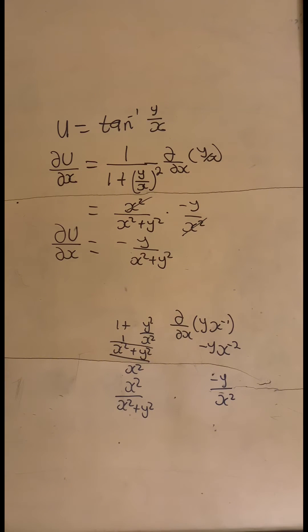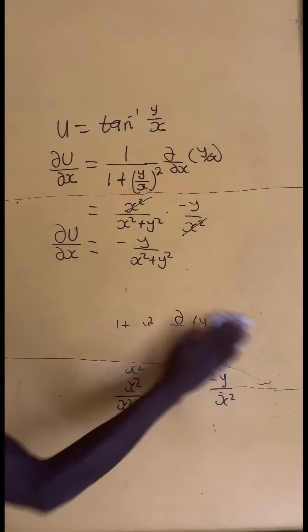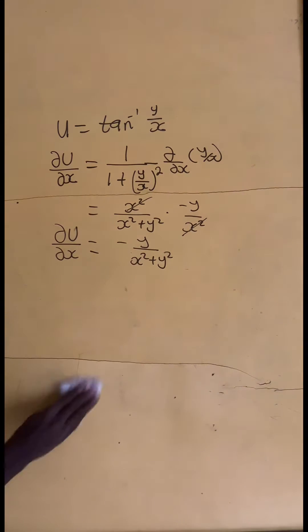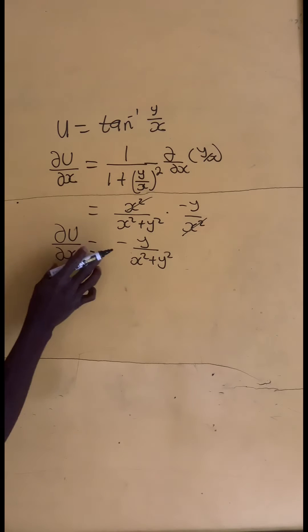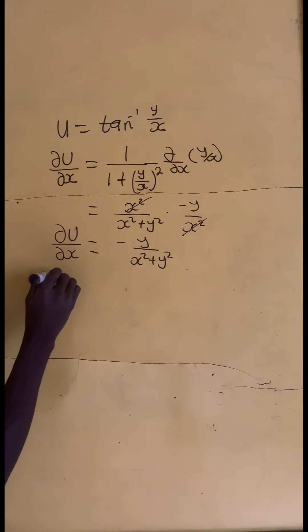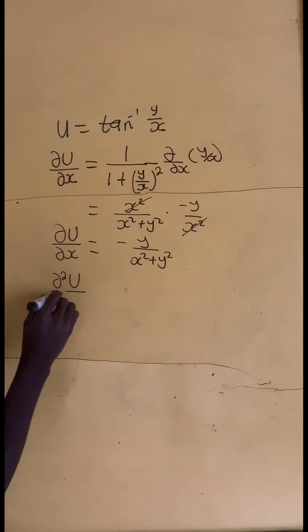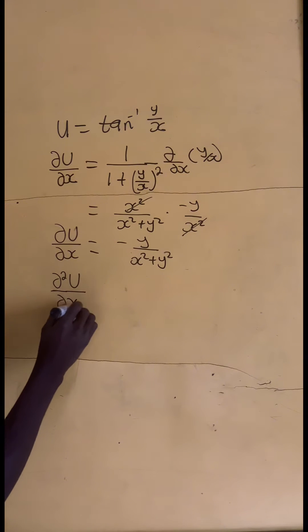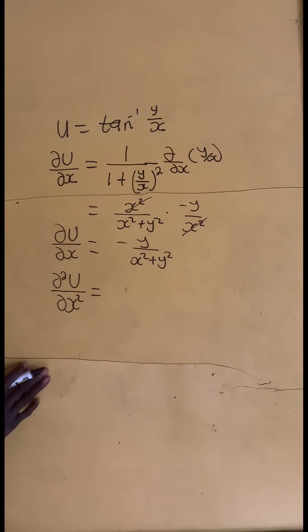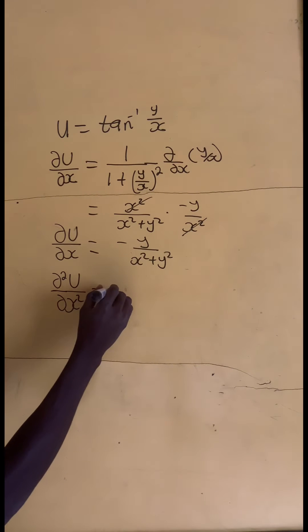That's very simple. I hope you are following it step by step. Now let's see — we need del squared u on del x squared. So what do we do? Let us use the quotient rule.